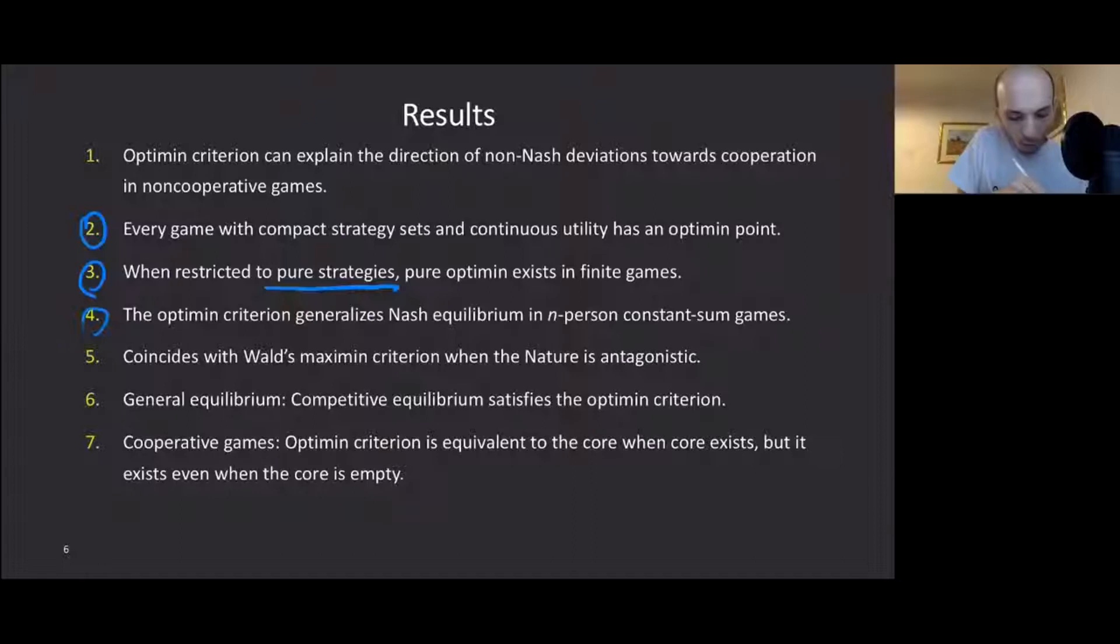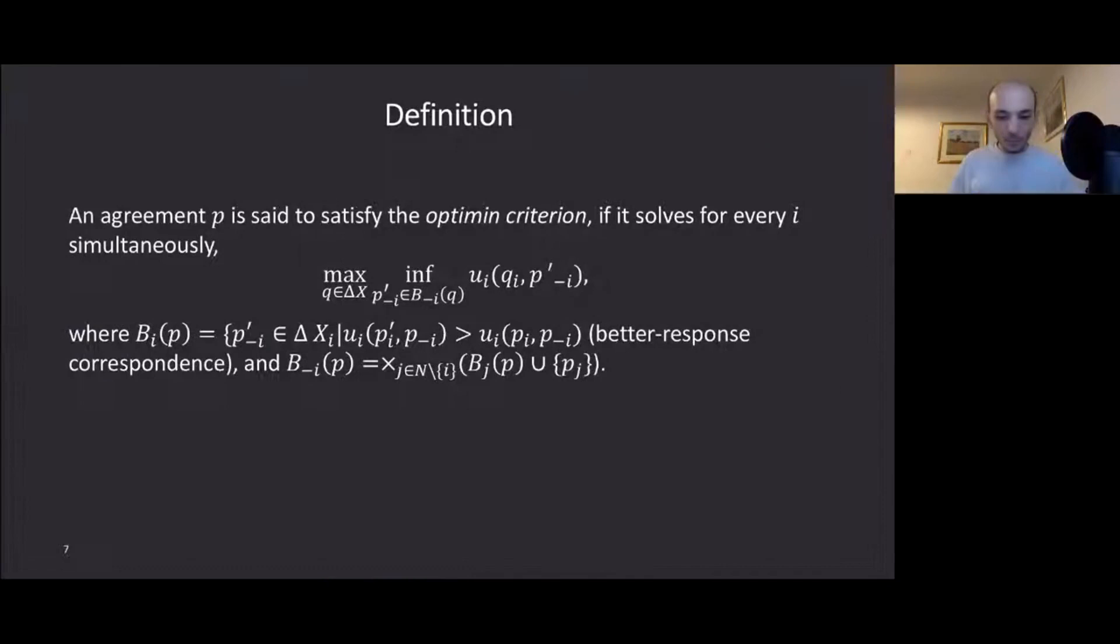The fourth point, the Optimin criterion generalizes Nash equilibrium in n-person constant sum games. So in every n-person constant sum game, every Nash equilibrium is an Optimin point. Five, it coincides with Wald's Maximin criterion in games against nature. In other words, in zero sum games, Optimin is equivalent to the Nash equilibrium or Maximin strategies. In general equilibrium, competitive equilibrium always satisfies the Optimin criterion. And in cooperative games, Optimin criterion is equivalent to the core whenever core exists, but it exists even if the core is empty. So core might be empty, and I'll give you an example when this is the case, when Optimin produces a prediction.